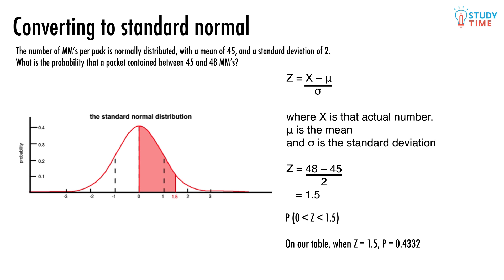And this is the kind of normal distribution problem you should be able to solve with your eyes closed by now. All we need to do is check out where 1.5 and 0 meet up on our table, and we find the answer is a probability of 0.4332.